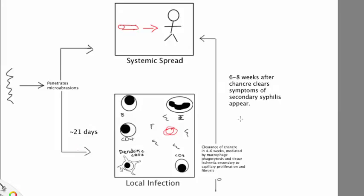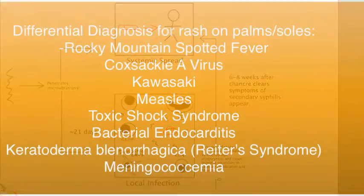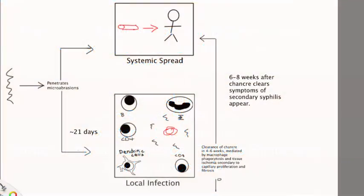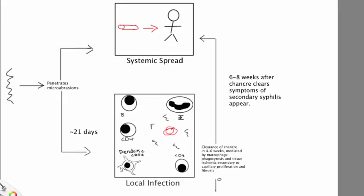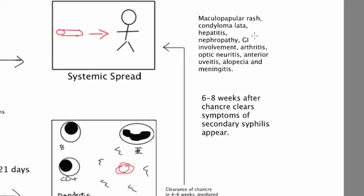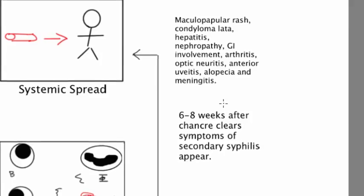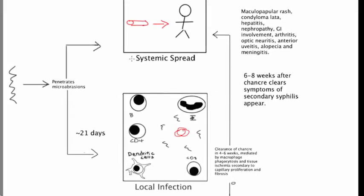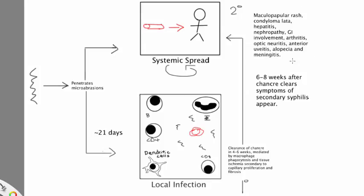The most common manifestation of secondary syphilis is a maculopapular rash over the entire body, predominantly on the trunk, palms, and soles — the palms and soles being a great diagnostic clue since few things cause a rash there. Another common skin finding is condyloma lata: a moist, warm, velvety, warty-like rash in the perianal region, vulva, or scrotum. Other complications include hepatitis, nephropathy, GI involvement, arthritis, optic neuritis, anterior uveitis, alopecia, and meningitis — because syphilis acts like a vasculitis.